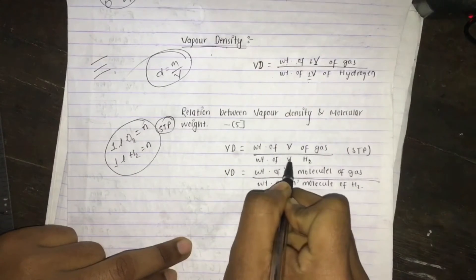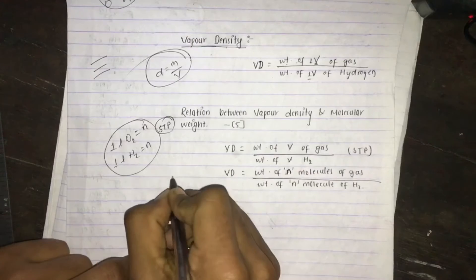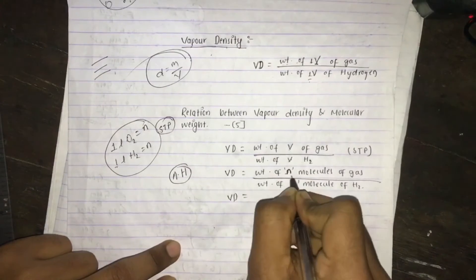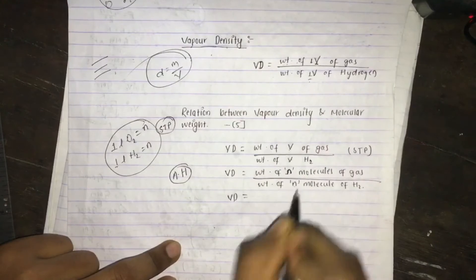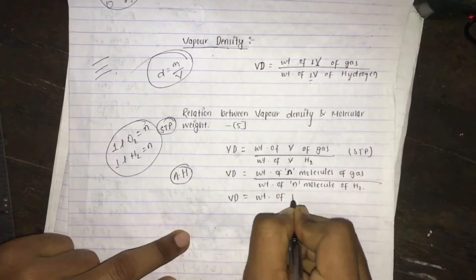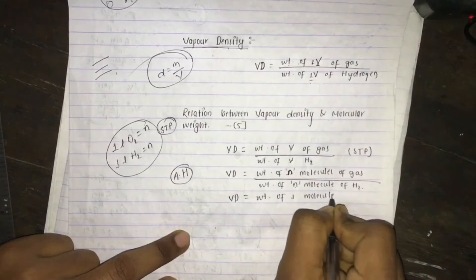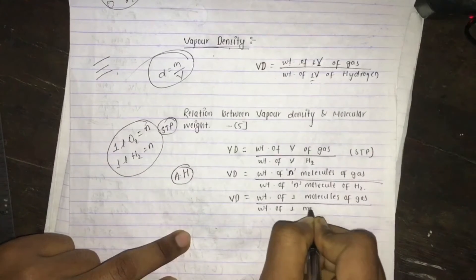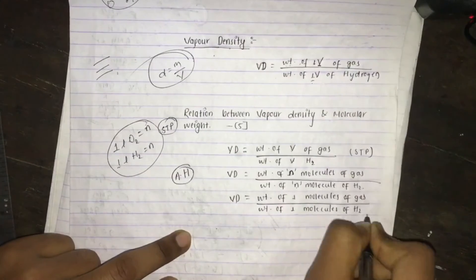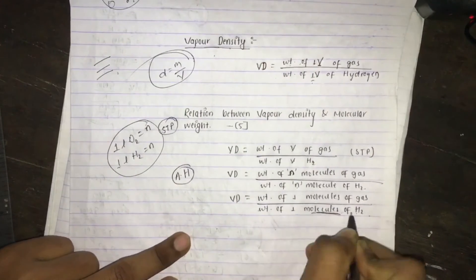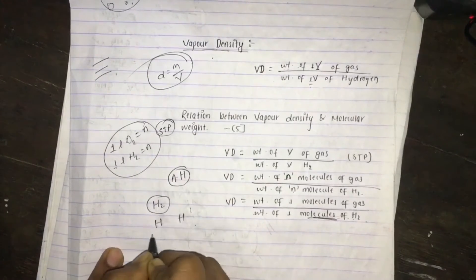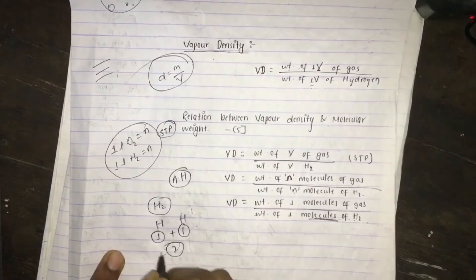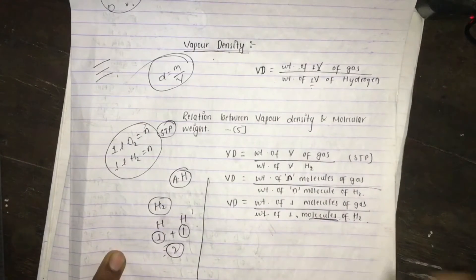By Avogadro's hypothesis, equal volumes contain equal numbers of molecules. So vapor density equals the weight of one molecule of gas divided by the weight of one molecule of hydrogen. The weight of one molecule of hydrogen is 1 + 1 = 2 amu.